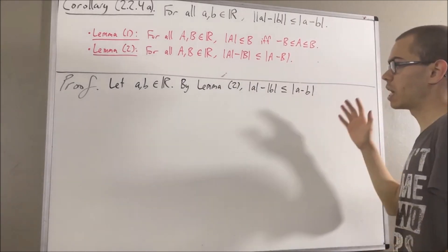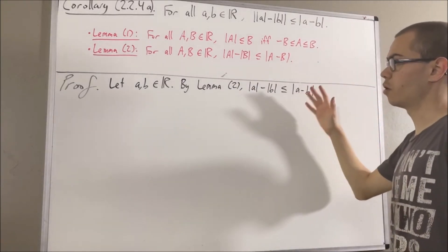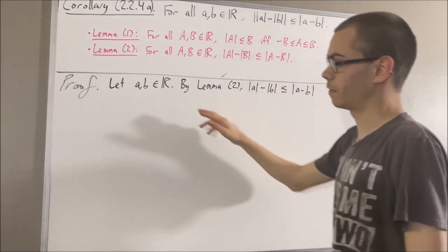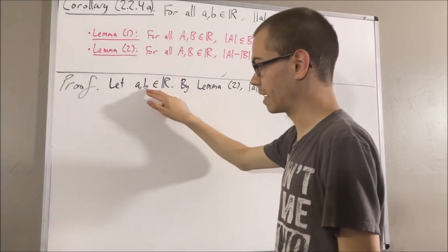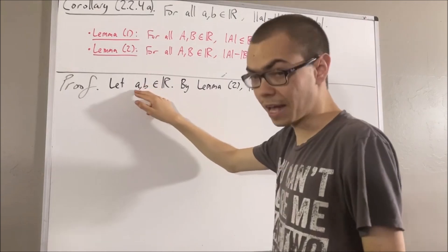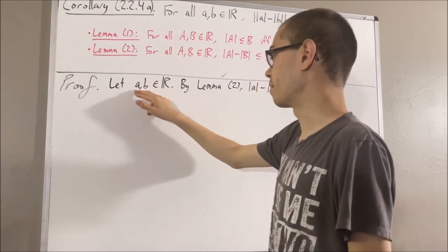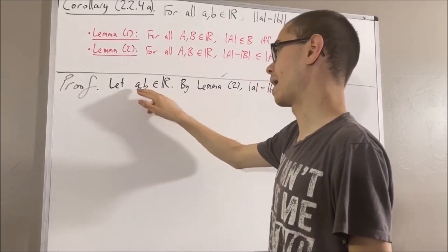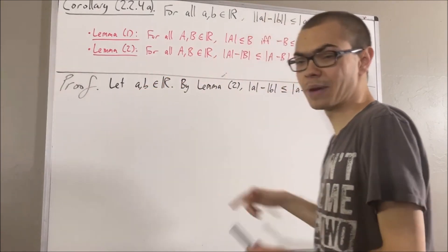Applying Lemma 2 again, we have that the absolute value of b minus the absolute value of a is less than or equal to the absolute value of b minus a.